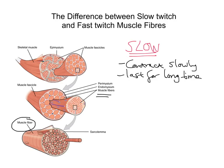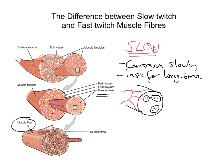If we draw a rough cross section of a slow twitch myofibril, we can see blood vessels and the ends of the actin and myosin filaments. We also have mitochondria, which I'll colour in blue. Mitochondria are the site of aerobic respiration, and they're found mainly near the outside layers of these muscle fibres.